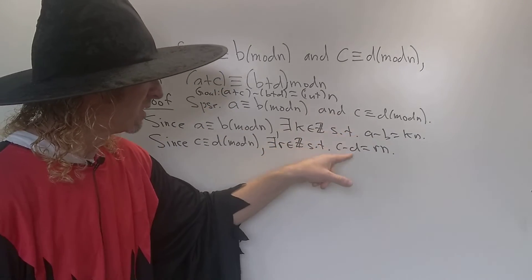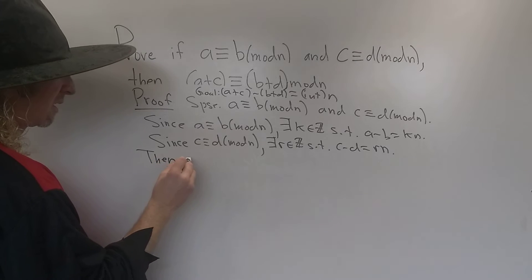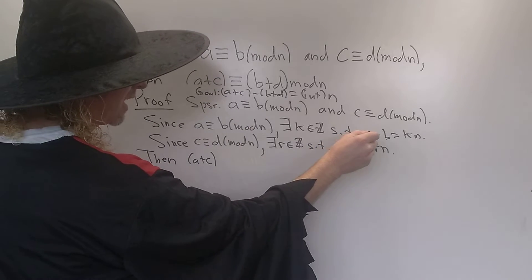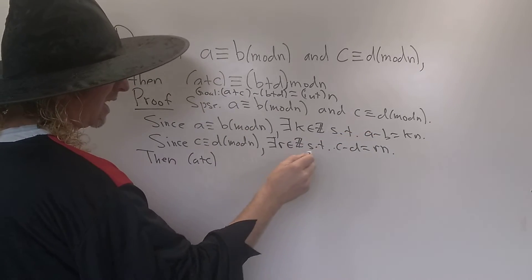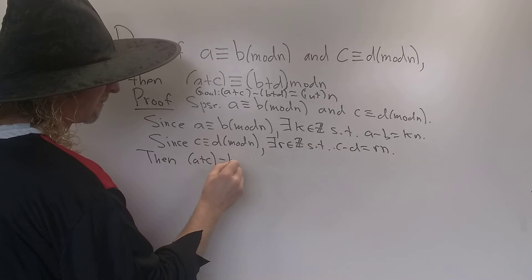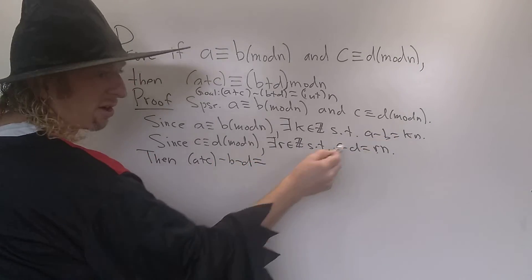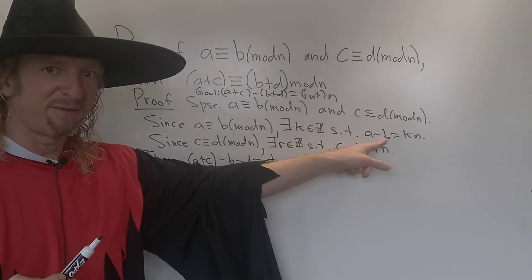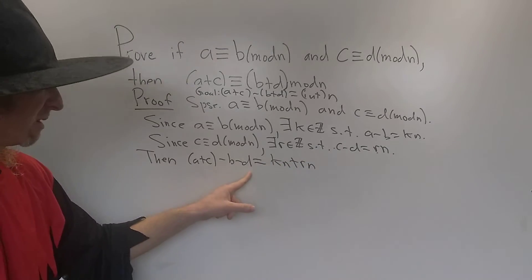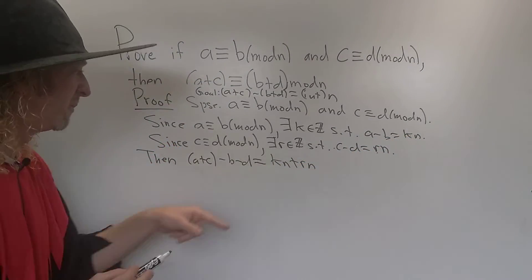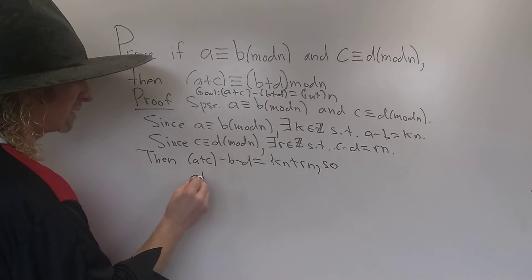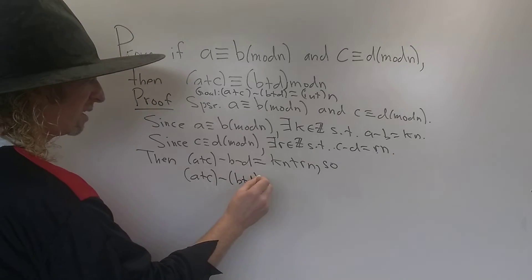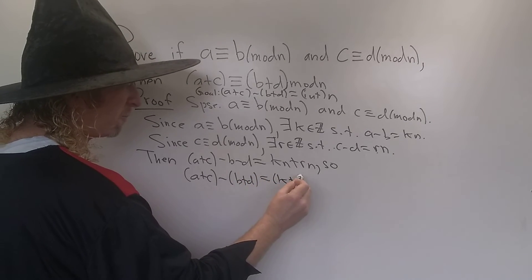If we add them: A plus C on the left, and negative B plus negative D, and on the right KN plus RN. So A plus C minus B minus D equals KN plus RN. Pulling out the N, we get A plus C minus B plus D equals (K plus R) times N.